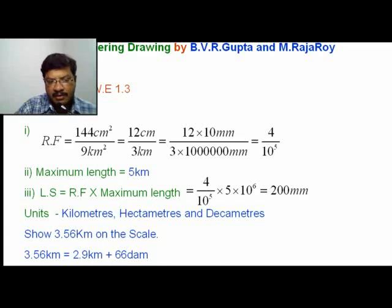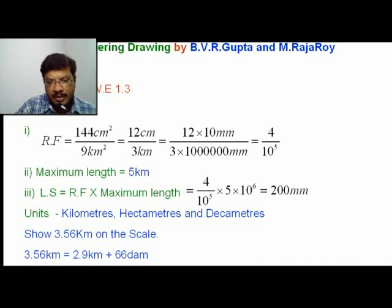From the RF and maximum length, you can get the length of the scale. The length of the scale works out to 200 mm. The units given in the problem to represent on the scale are kilometers, hectometers, and decameters. They ask you to show a distance of 3.56 km on the scale.